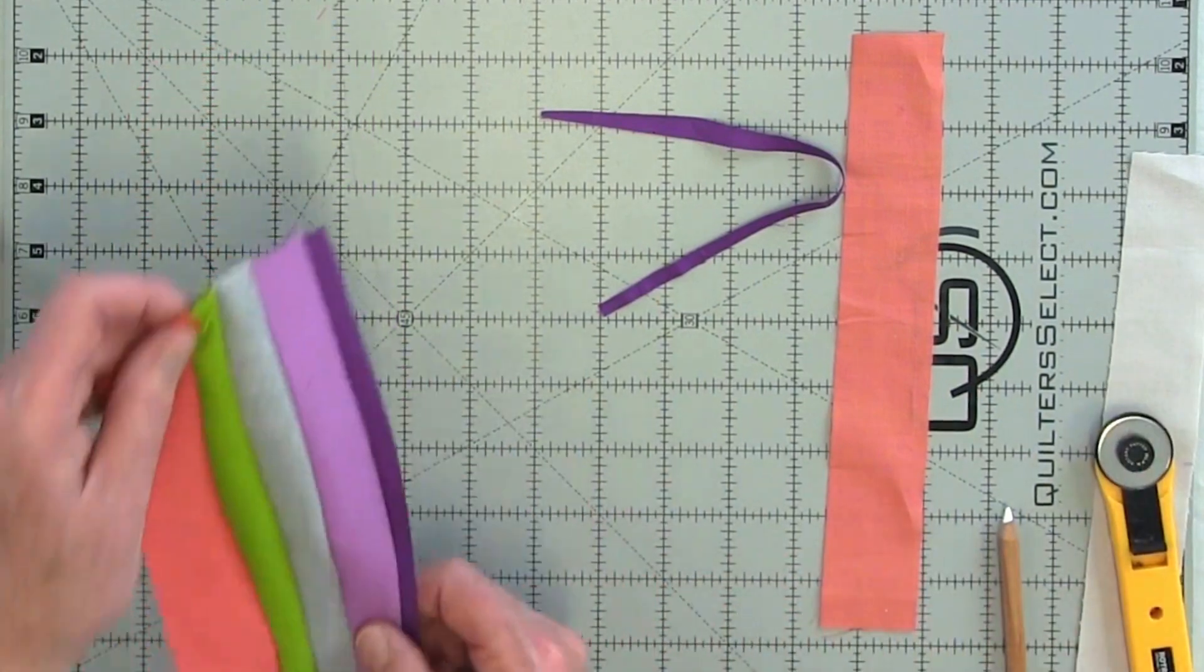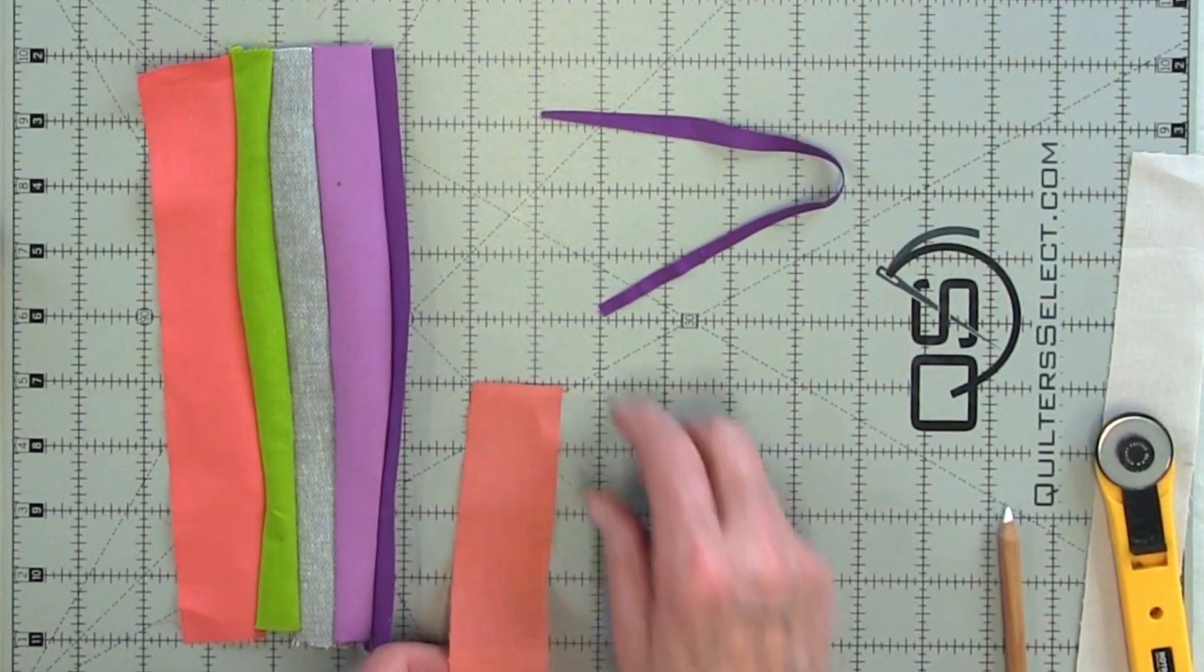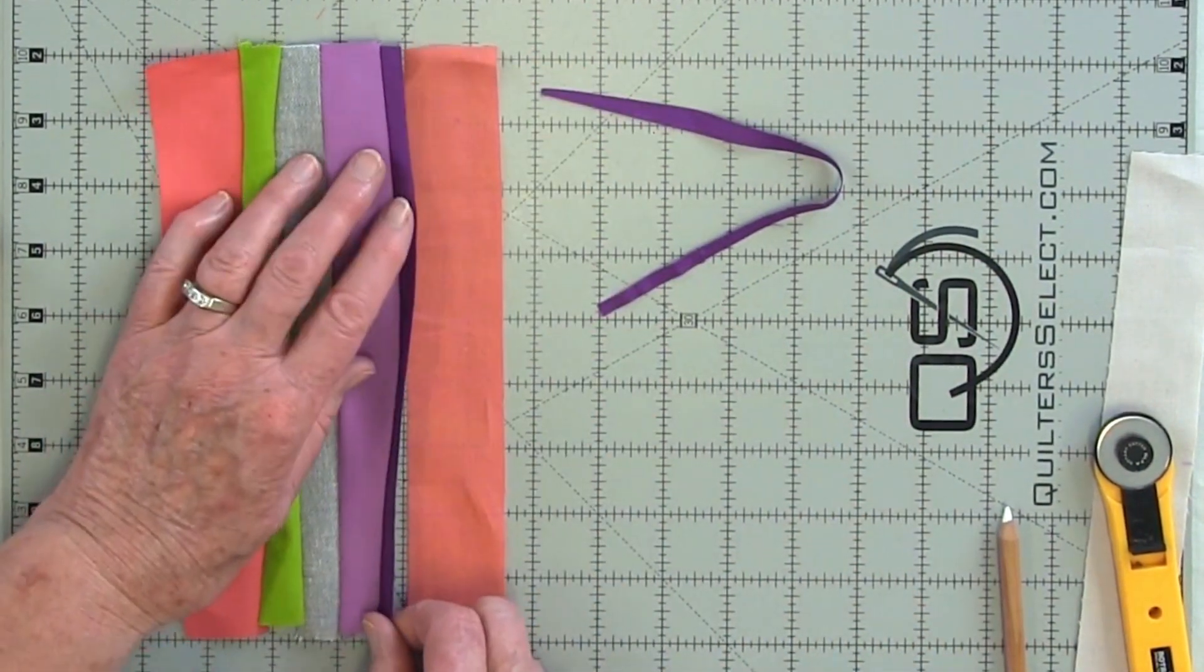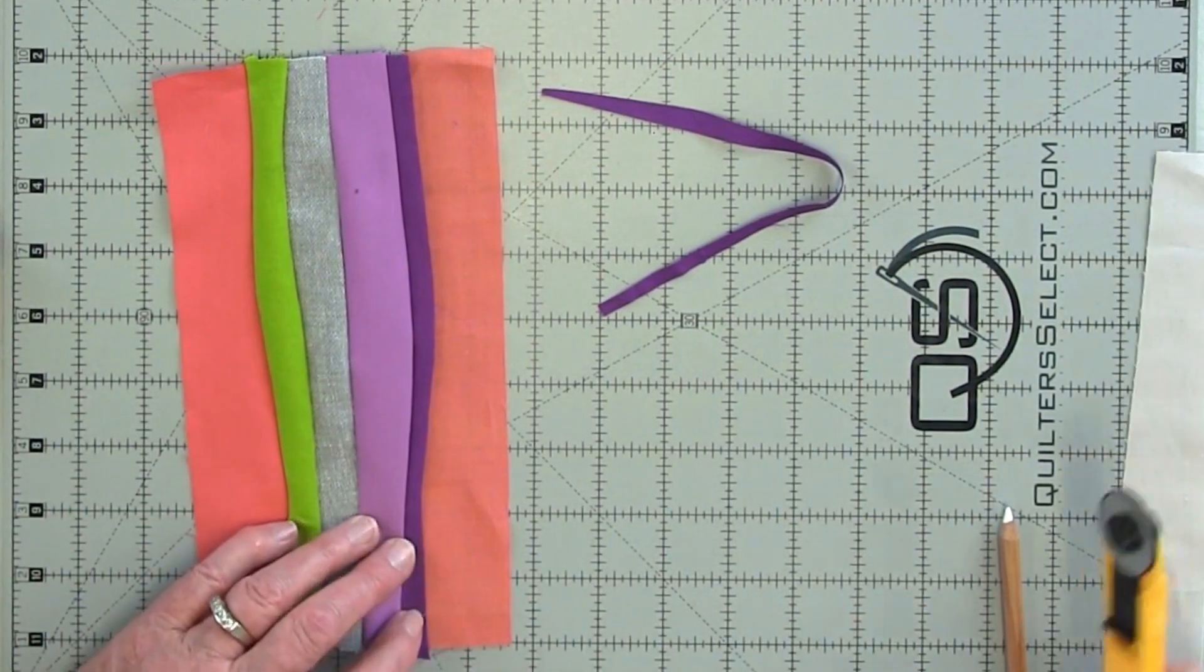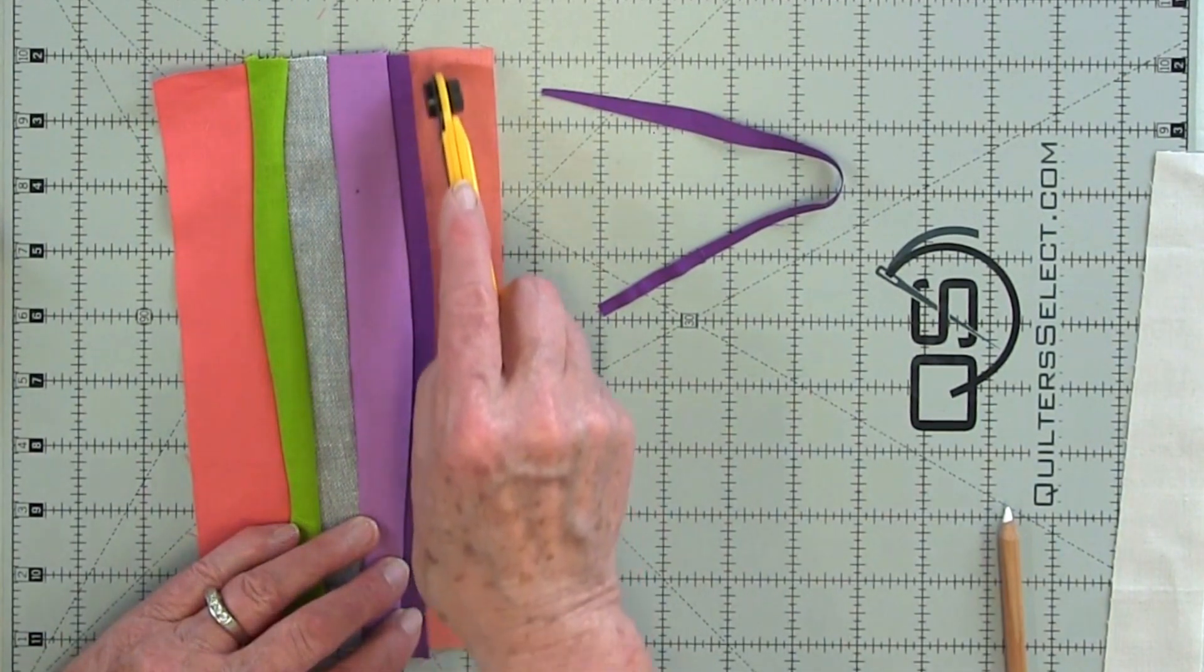Then I'm going to flip this over so I have right sides facing me. And lay down the next fabric that I want to use. Barely cover the raw edge. And I'll use this as a pattern to cut my next line.